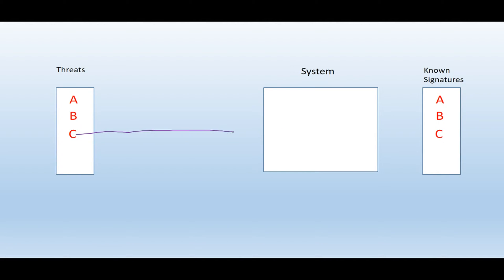So if threat C were to be implemented again, it will be compared with its list of known signatures. C against A — they are different. C against B — they are different. C against C — they are the same. So this is something the system has seen before and it knows it's malicious, so it will quarantine this threat and it won't be able to run its code.